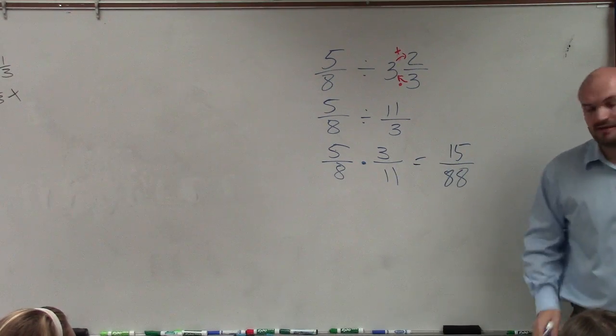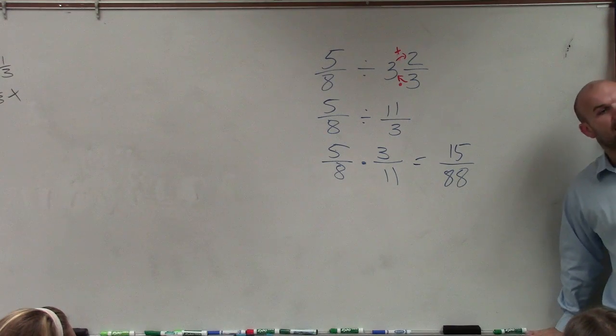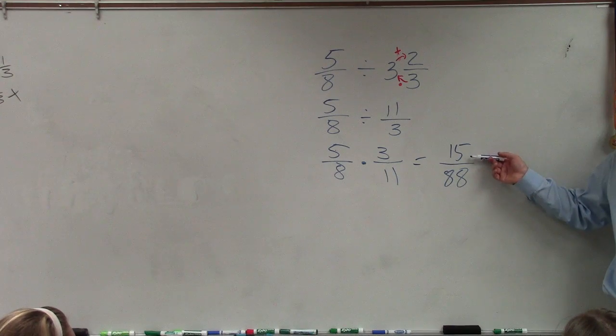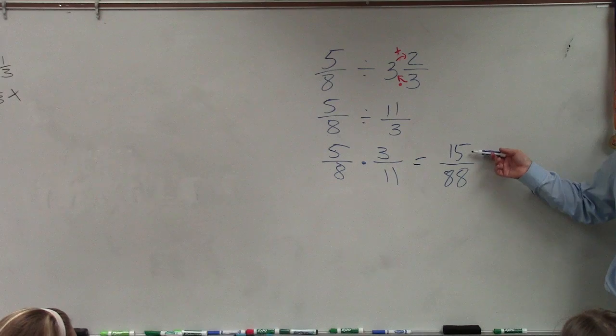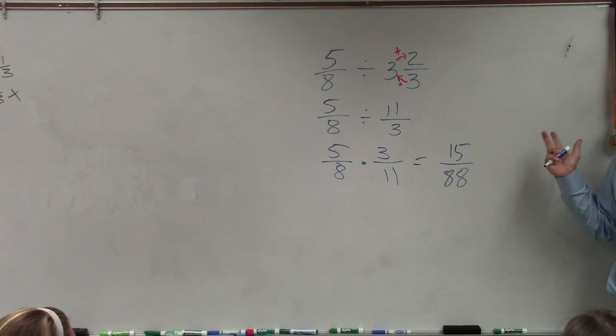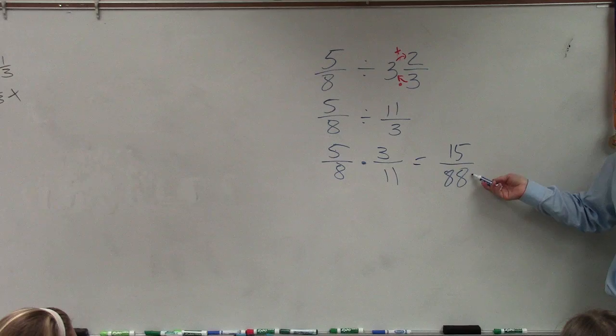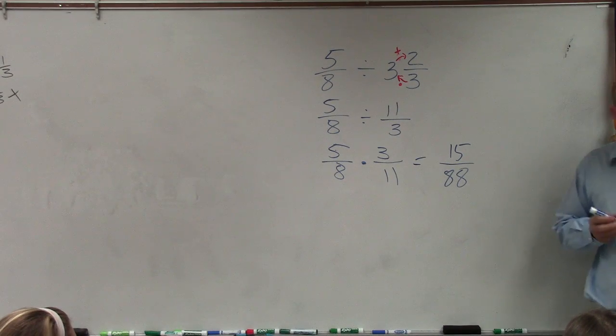Then always make sure you see if you can divide a number out, which in this case, common factors of 15 would be 3, 5, 15, and none of those go into 88. So that would be my simplified answer.